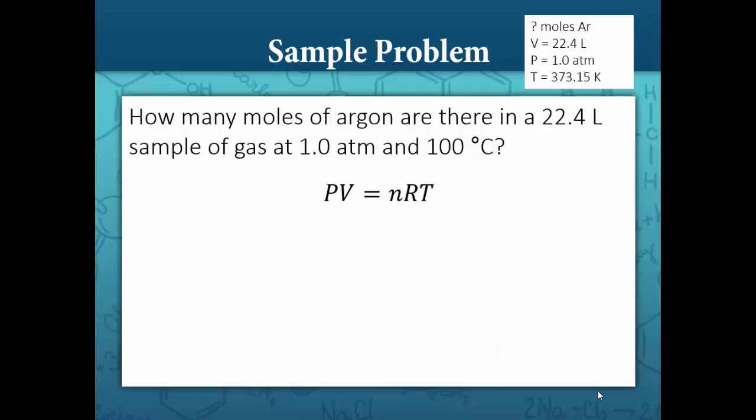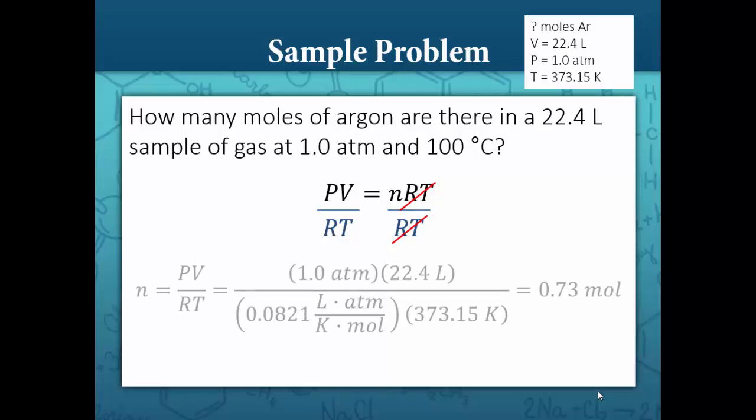Our equation again is PV equals nRT. We want to isolate n, so we're going to divide each side by RT. RT cancels out on the right-hand side, and our equation becomes n equals PV over RT. P in this case is 1.0 atm, volume is 22.4 liters, divided by Rydberg's constant 0.0821 liters atmosphere per mol, divided by temperature 373.15 Kelvin, and we get 0.73 moles.